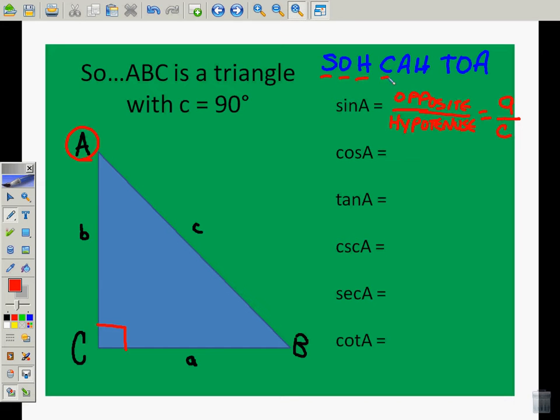So, cosine is adjacent over hypotenuse. Adjacent over hypotenuse. So, if we're looking at angle A, once again, we're going to go adjacent, which is B, over hypotenuse, which is C. Notice what I did there. I didn't take C, though it is adjacent to A, because C is the hypotenuse. The tangent of A is opposite over adjacent. So, opposite over adjacent. Opposite of A is A, and adjacent is B.